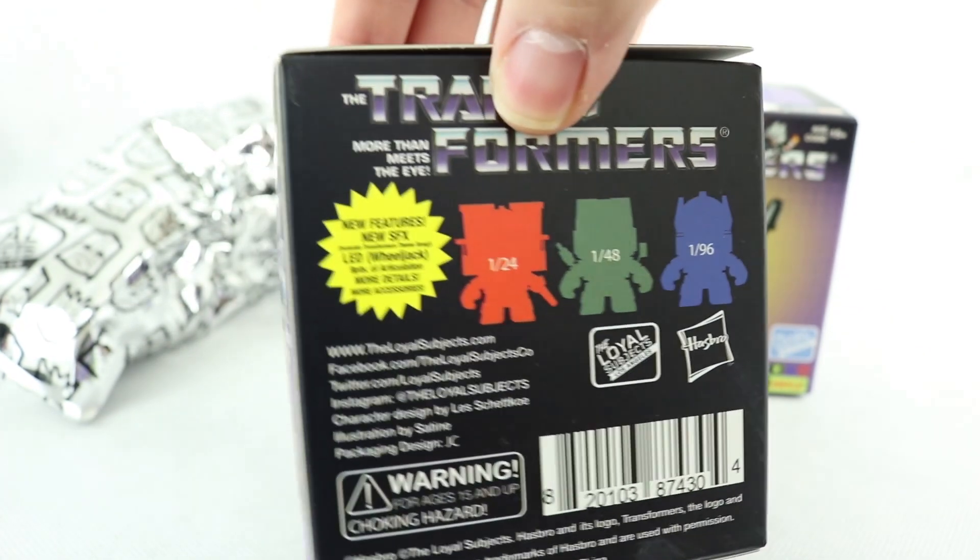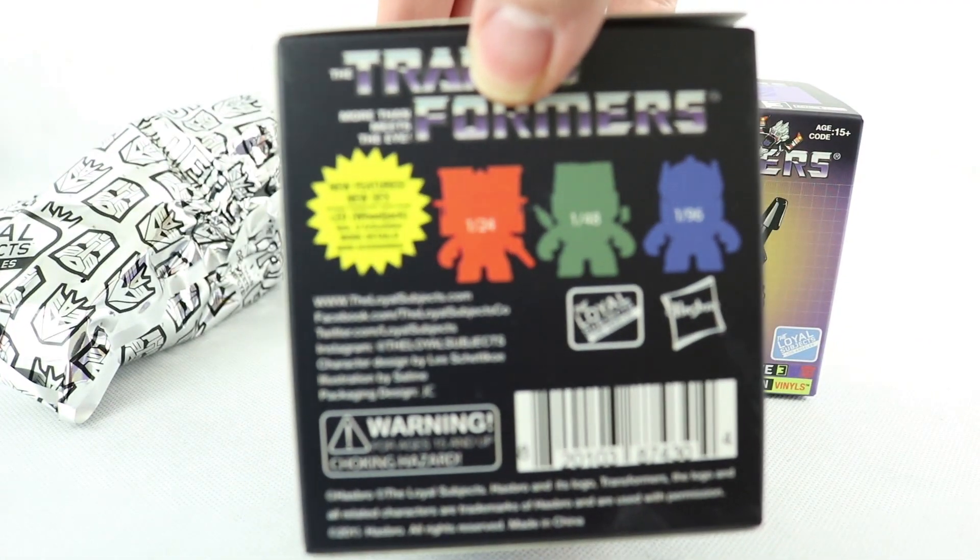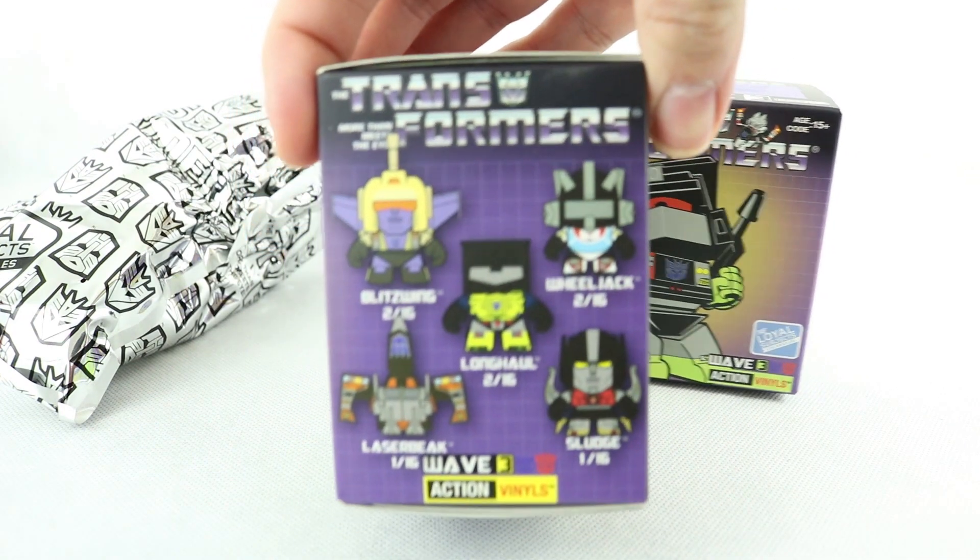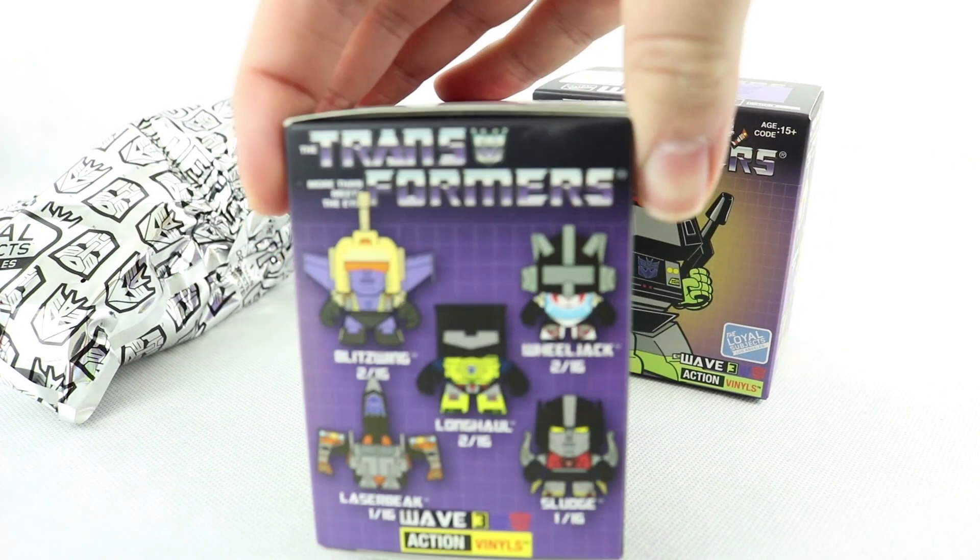On the back it shows some sort of rarity thing I think, I'm not pretty sure. And there you can see Blitzwing, Longhaul, Wheeljack, Laserbeak and Sludge. Laserbeak looks pretty cool.